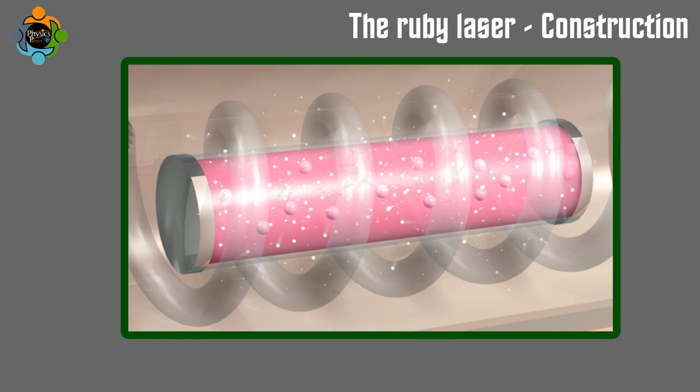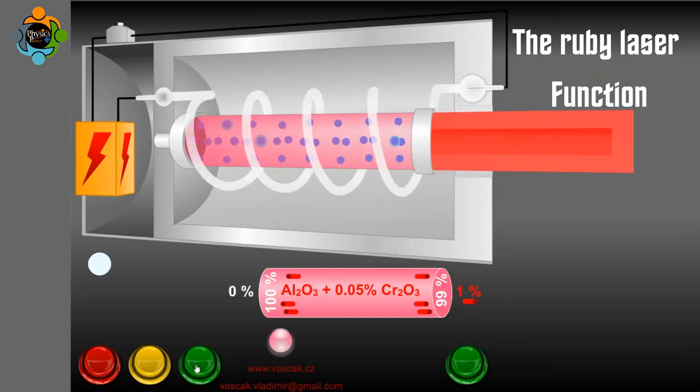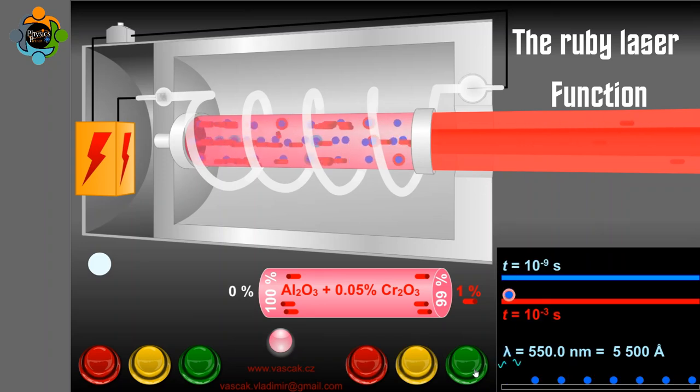When the flash lamp is triggered, it emits a burst of intense light that excites the chromium atoms in the ruby rod. This causes the atoms to release energy in the form of photons.